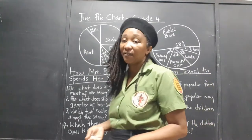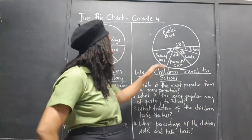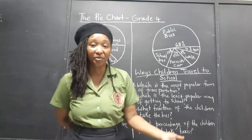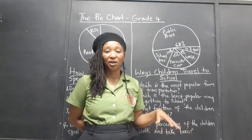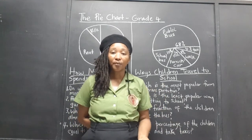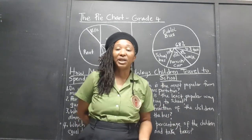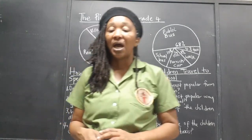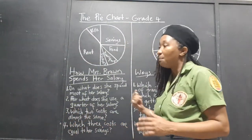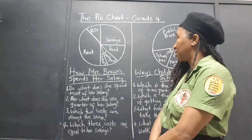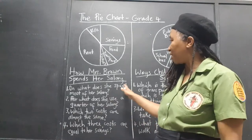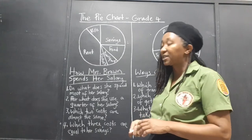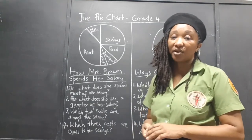Sometimes we are given figures, sometimes we are given percentages, sometimes we are given degrees, sometimes we are given actual amounts. So we have to look at what we are given each time and make comparisons. For this particular pie chart, it shows how Mrs. Brown spends her salary.